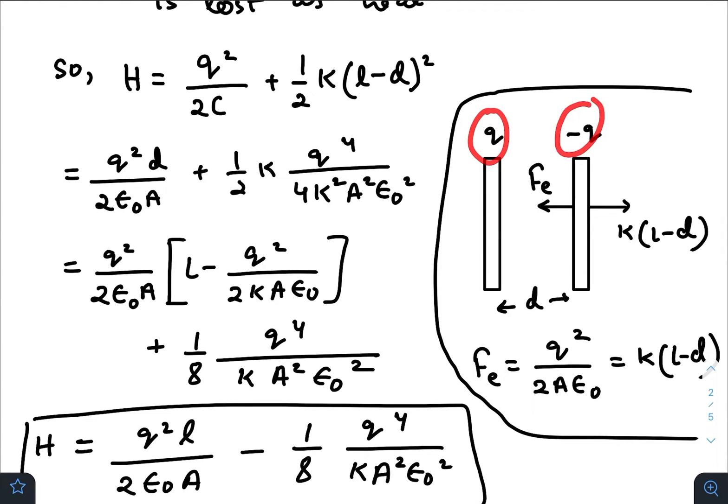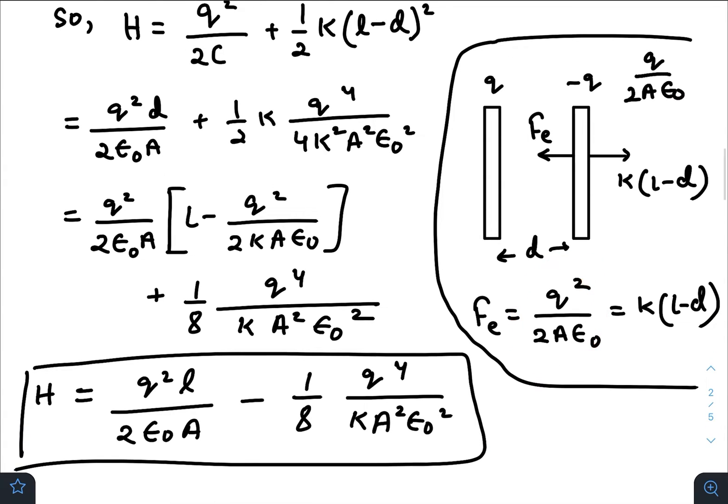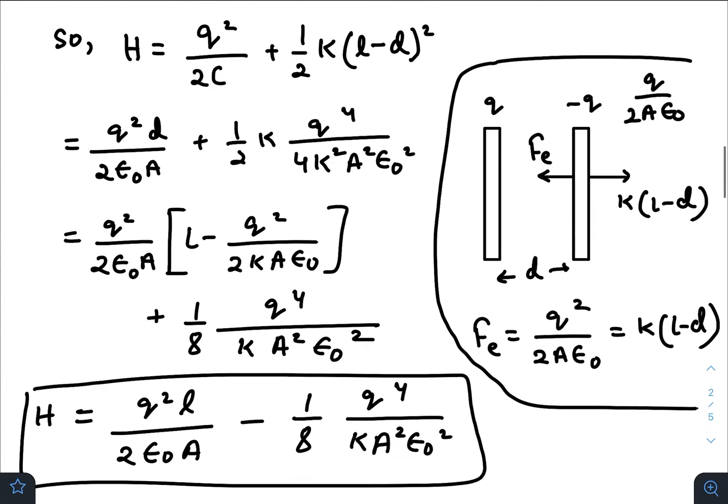As I have said earlier, Q and -Q. The force with which this plate will pull this plate would be F_E, and F_E we know would be Q²/(2Aε₀) because the field created by this plate on this plate is Q/(2Aε₀). So the force will be Q times this one. This is the force of attraction between the two plates that is balanced by the force due to the spring, that is K times the compression (L - D), because L is the natural length and D is the final length. So L - D is the compression.